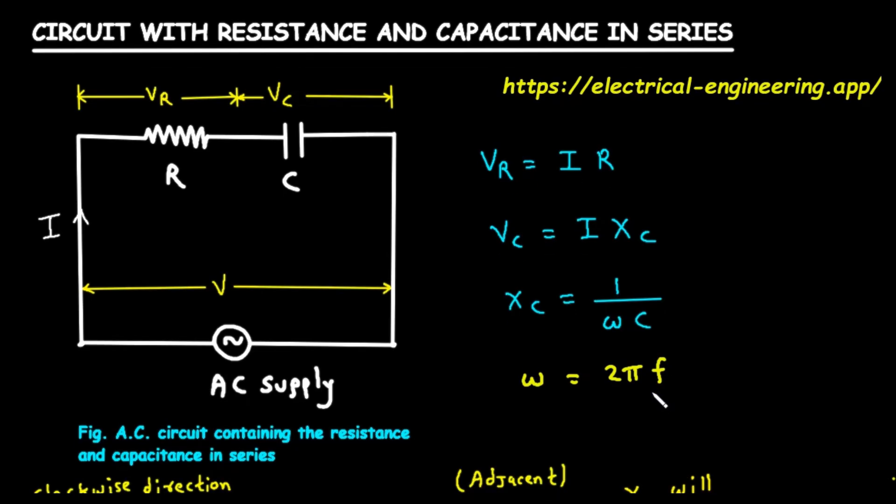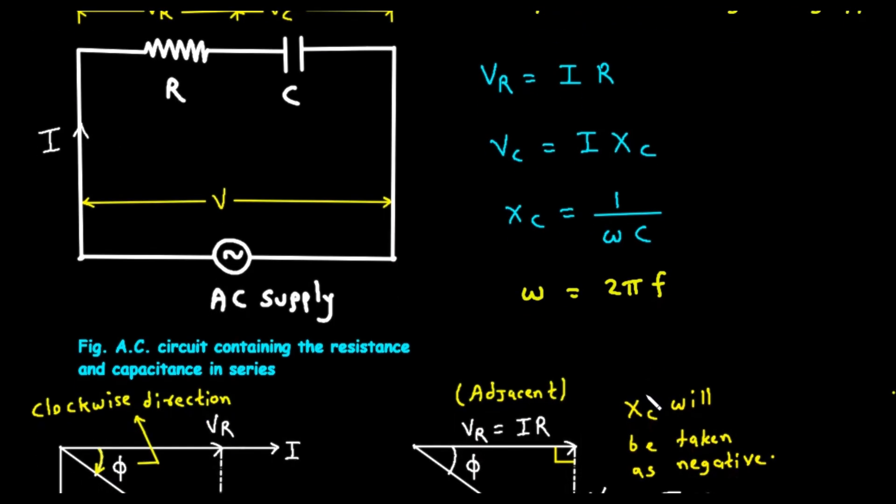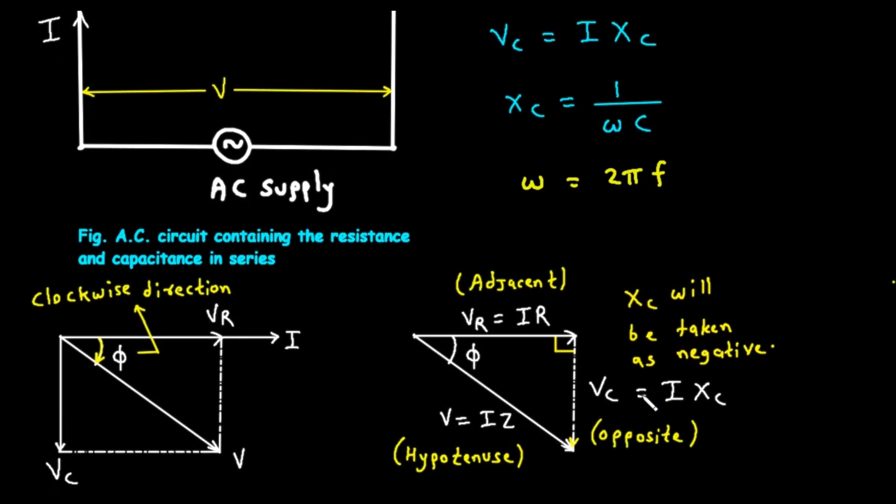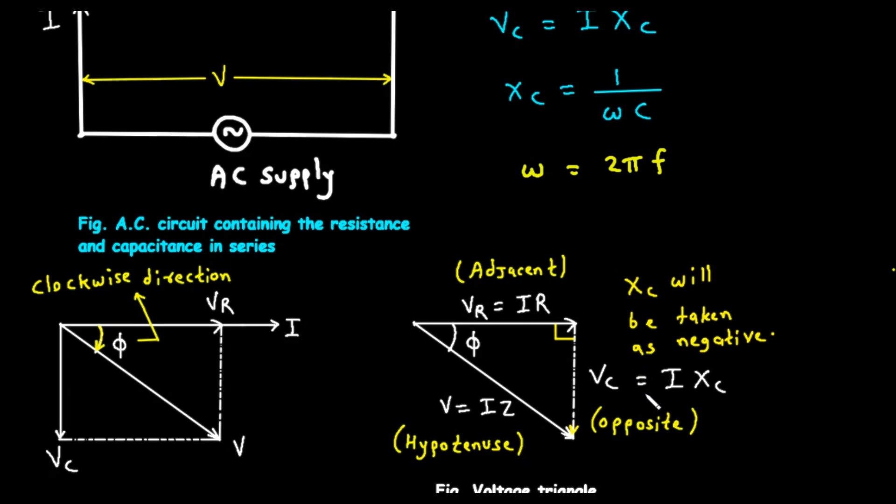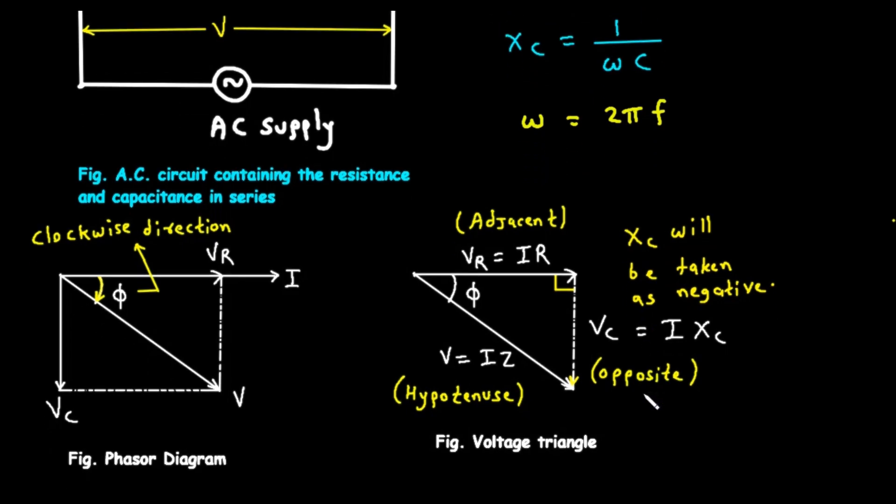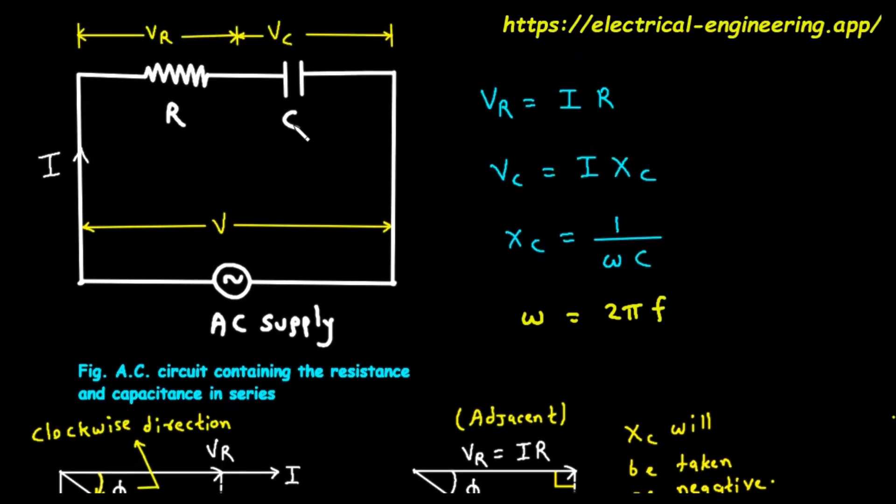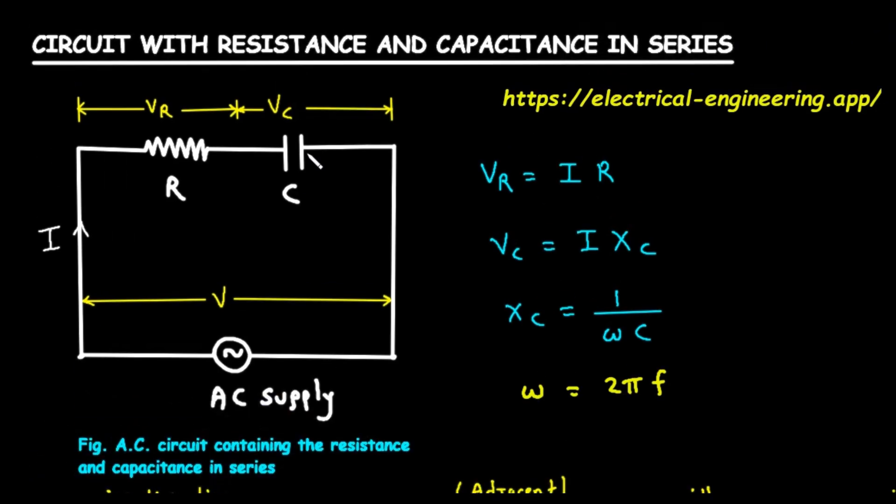A crucial point for capacitors in an AC circuit is that the voltage and current are not in phase. The current flowing through a capacitor actually leads the voltage across it by 90 degrees. Think of it like this, the capacitor has to let current flow in to start charging up before a voltage can build across it. Because the voltages across the resistor and the capacitor are out of phase with each other, we can't just add them together like simple numbers.